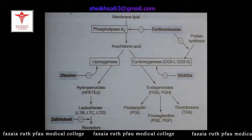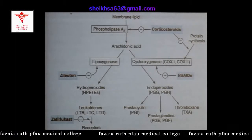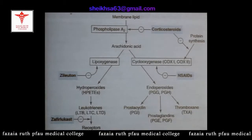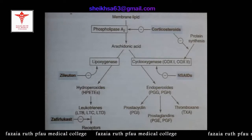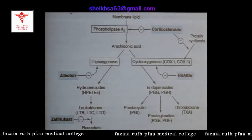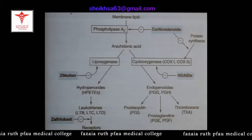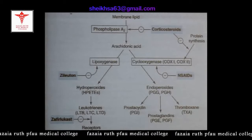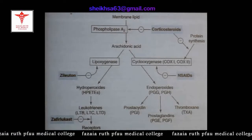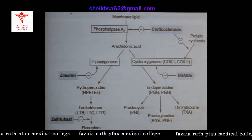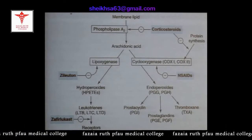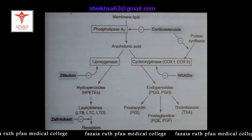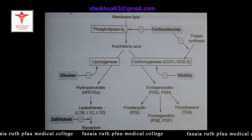When trauma — mechanical, electrical, physical, or immunological — occurs to the cell membrane, there is a release of arachidonic acid from the membrane phospholipids. Arachidonic acid is an eicosanoid with two pathways: the cyclooxygenase pathway and the lipoxygenase pathway. We are concerned with the lipoxygenase pathway, through which arachidonic acid is converted into leukotrienes.